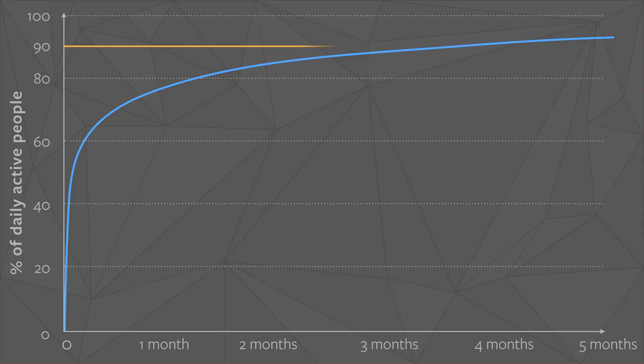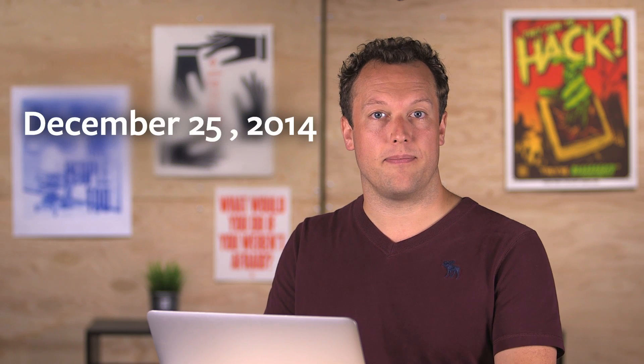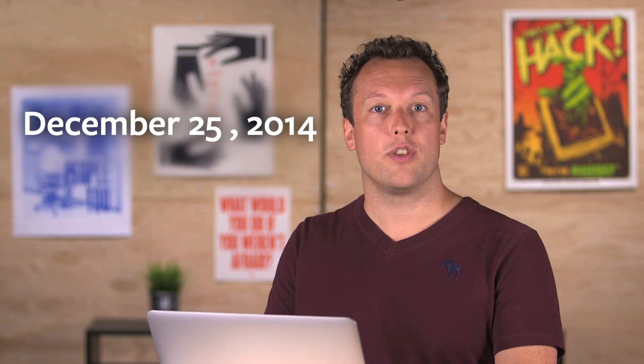If you have mobile apps, one thing to consider in planning when to upgrade is the time it takes for people to download the latest binaries from the store. Our data shows that on iOS, it takes around 80 days for 90% of an app's daily active people to upgrade to the latest version of your app. On Android, this is even more acute — it takes around 140 days for 90% of people to upgrade. V2.0 and the new login contain significant changes, so we strongly recommend you aim to ship an updated version of your iOS and Android apps to the store in time for the holiday season, that's December 25th, 2014.